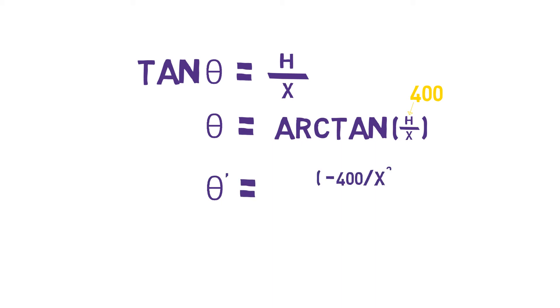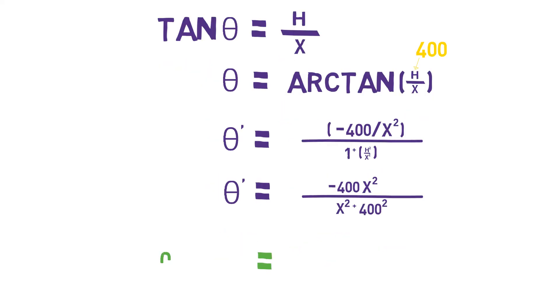We can now derive the equation by using implicit differentiation by deriving with respect to theta. We then isolate dx over d theta and solve it, which gives 0.11 meters per second is the rate at which the shadow is increasing.